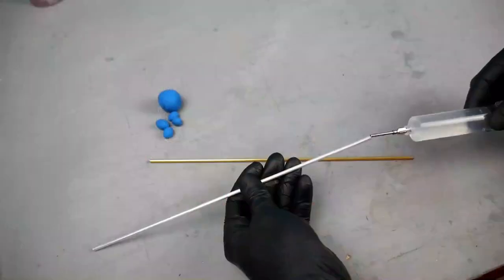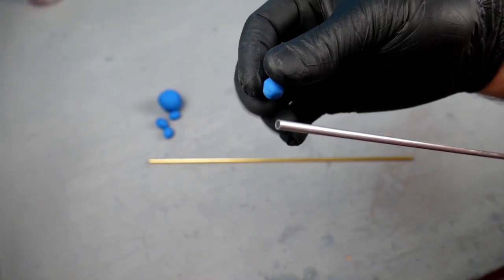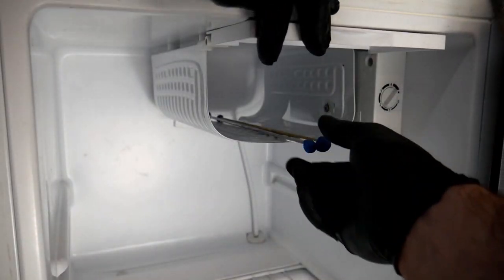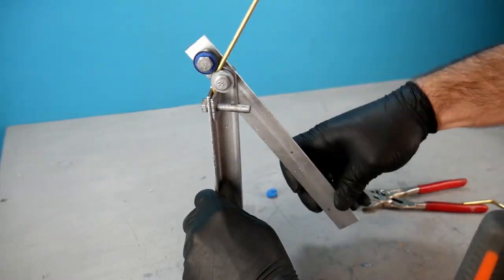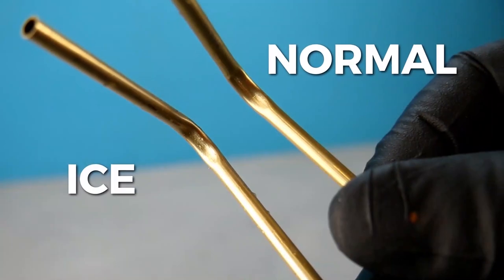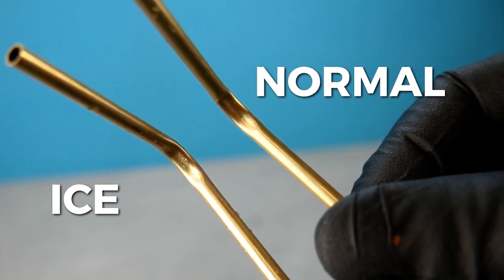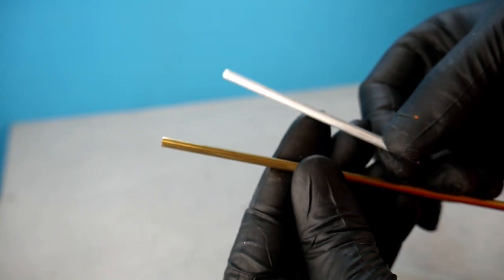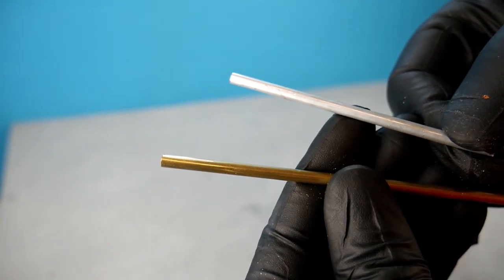On Reddit there was a suggestion that filling the tubes with water then freezing them makes for a better bend. So I did that and kept the ends with plasticine substitute. Then I put them in the freezer and once they were frozen I bent these too. The aluminum seems to perform better with the ice, but there's less improvement with the brass. The aluminum is much softer than the brass, which is likely the reason behind this result.